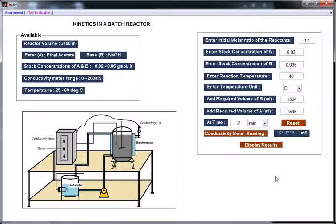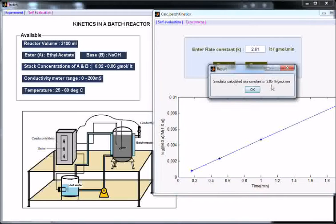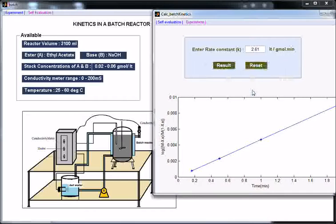After calculating this rate constant, one can check the value, cross check the value using self evaluation. Click the button self evaluation. Enter rate constant 2.61. Click the button result. Simulator calculated rate constant is 3.5. We have done calculations only for a few readings. The plot would look like this. This is how you do the experiment. Thank you.